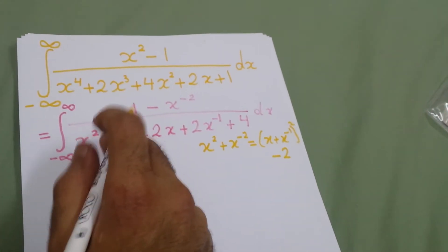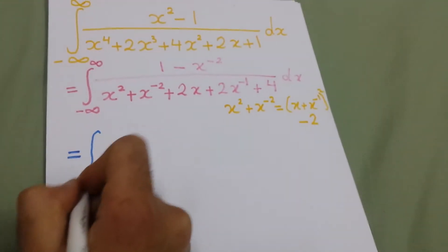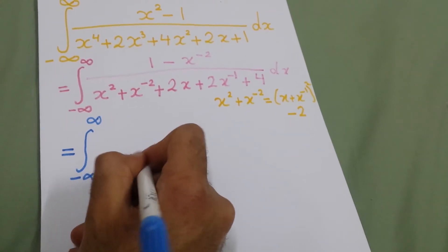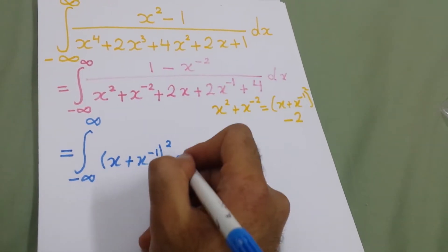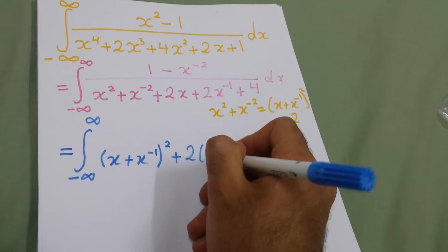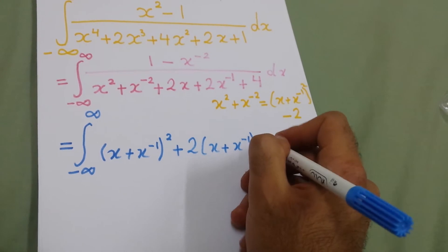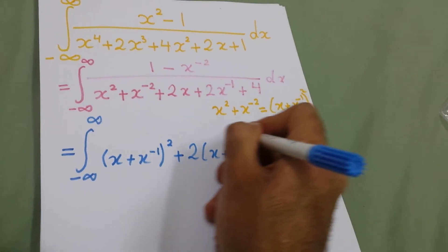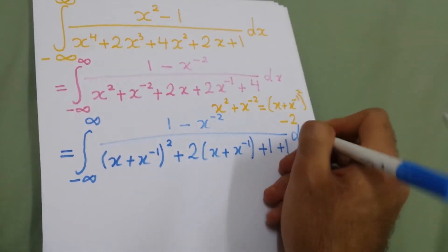We will substitute this in, so the integral will be equal from minus infinity to infinity: x plus x to the power minus 1, squared, and here we take 2 as a common factor, plus 2 times x plus x to the power minus 1, and we have plus 4 minus 2, so it will be plus 2. We make it plus 1 plus 1, and we have 1 minus x to the power minus 2 dx.